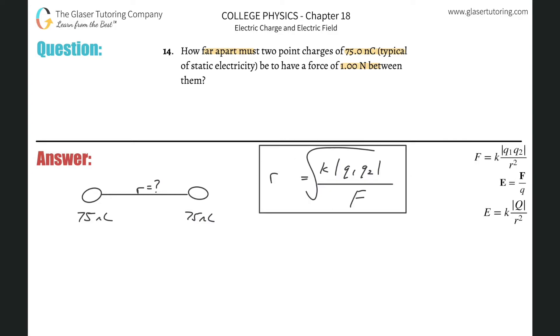Here r will then be equal to the square root now of 8.99 times 10 to the ninth times now the product between them. And it's the absolute value, so just make sure it's positive. You can always plug in just the positive values too, it doesn't matter.